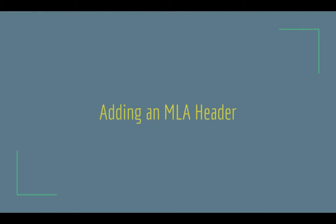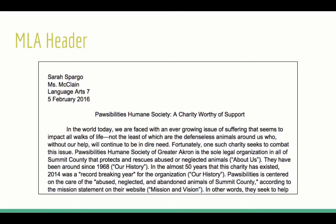The first thing we are going to talk about is adding an MLA style header. The header on this page is what is in the upper left hand corner. The way it goes for MLA is that it's your name, your instructor's name, the name of your course, and the date. Notice the date is written in the formal style — it says 5 February 2016 with no comma. That is the way it needs to be done. You can pause the video and go ahead and do this on your rough draft.